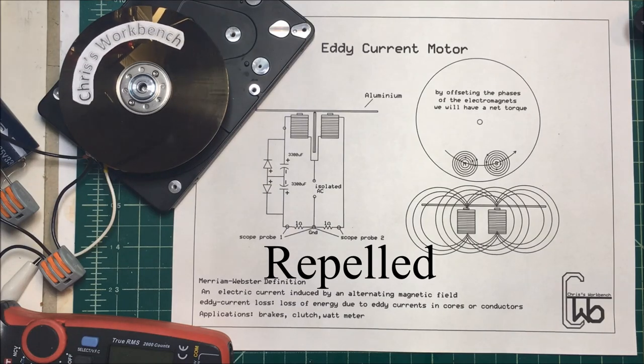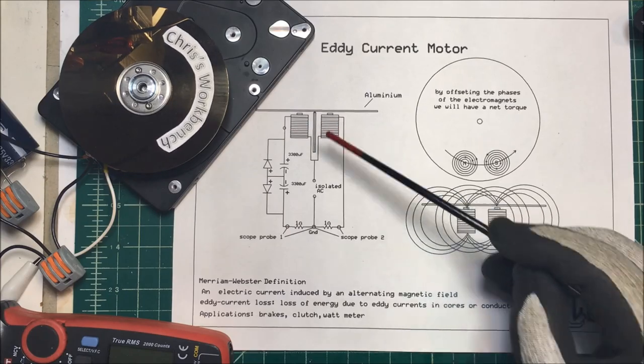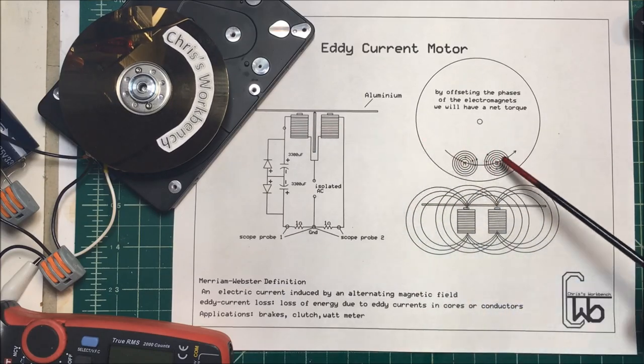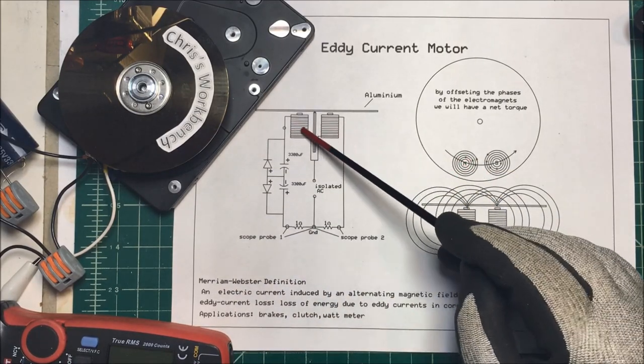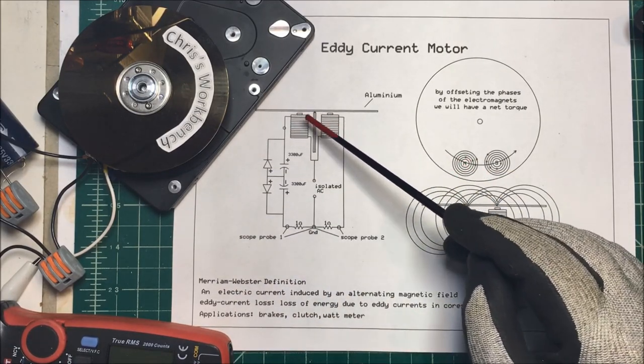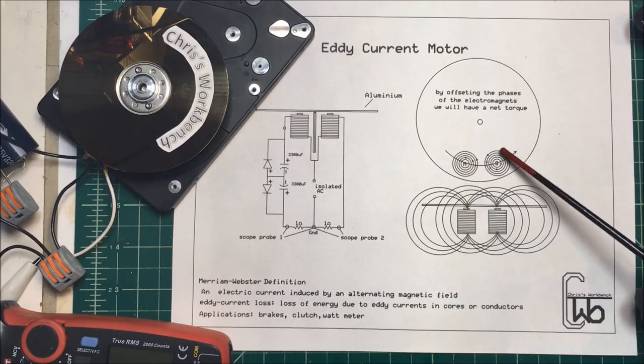So what we want to do is we're going to use an electromagnet and we're going to use two of them because it has to be changing. I have to be able to change this from north pole to south pole and back so that I create a rotational torque in here.